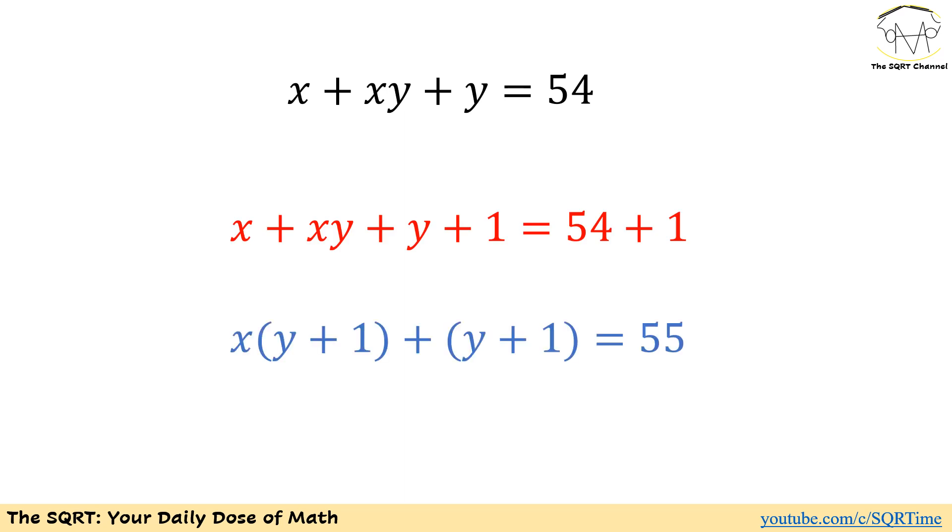If we do this, then we are going to end up with x plus xy plus y plus 1 is equal to 54 plus 1. Now, we are going to factor out what we have on the left hand side to see what we can do with it.